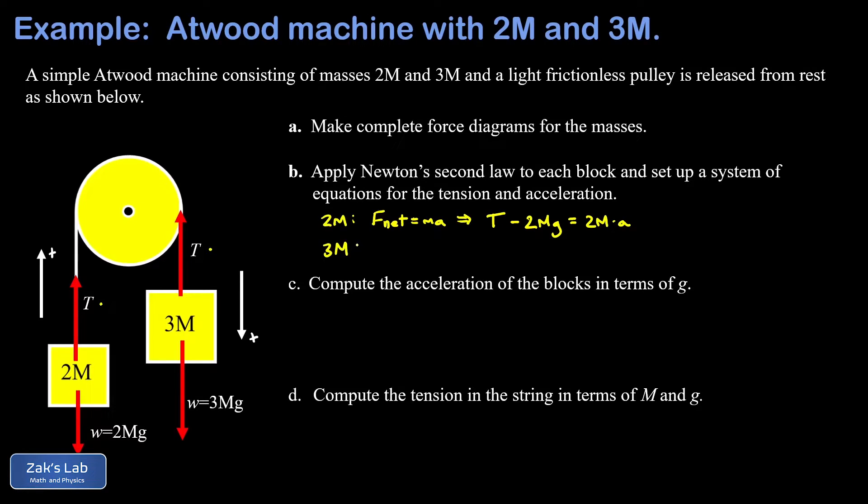We do a similar thing for 3m, but for this analysis, downward was defined as positive. Again, it's just F net equals ma. This time, our downward 3mg counts as positive, and our T counts as negative. That's the net force, and it's equal to the mass we're talking about, 3m, multiplied by its acceleration. So that's the system of equations that we're asking about in Part B.